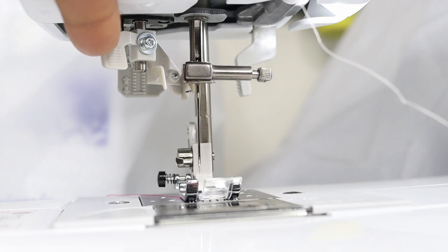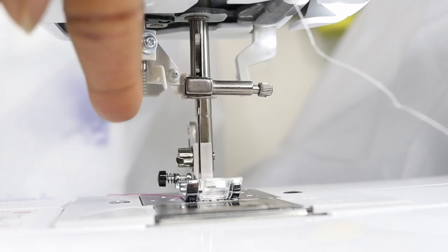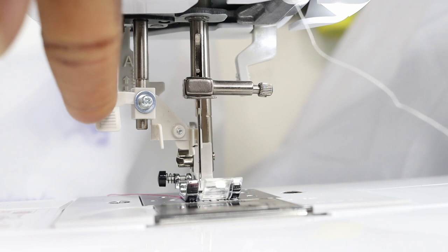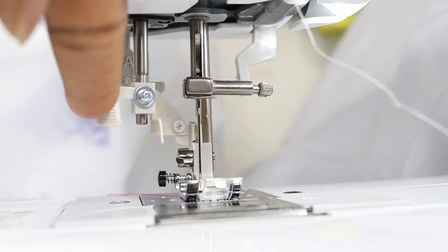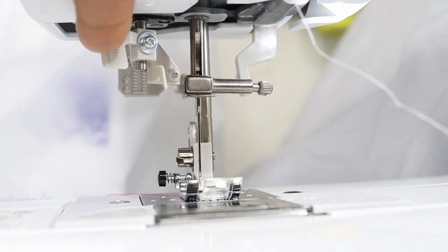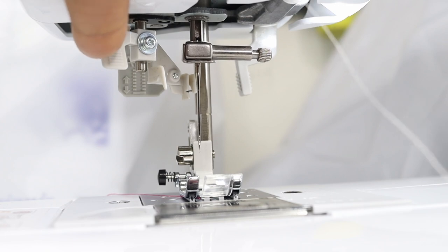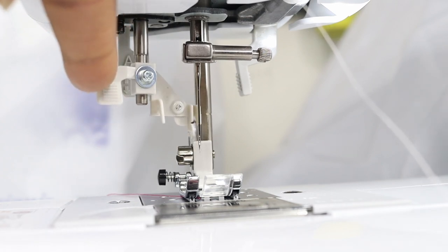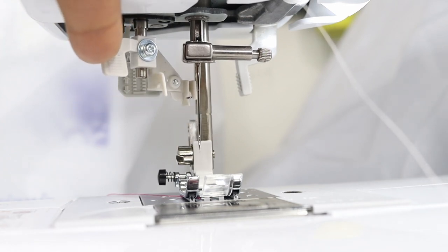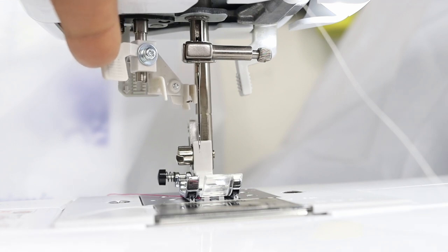I'll also demonstrate that the needle actually has to be in the right position for this to work. To make sure the needle is in the right position, you turn that wheel on the right side of the machine until the needle is all the way up, then that hook is going to get caught in the eye of the needle once the lever is pulled down.